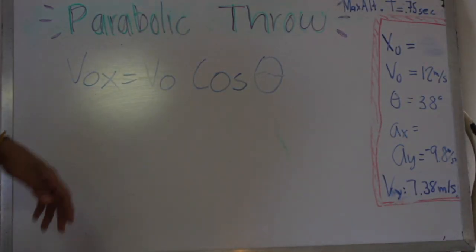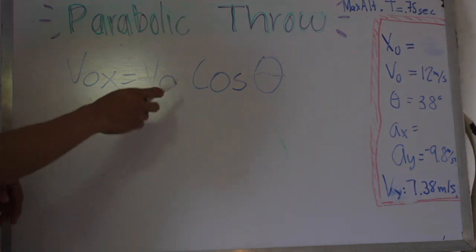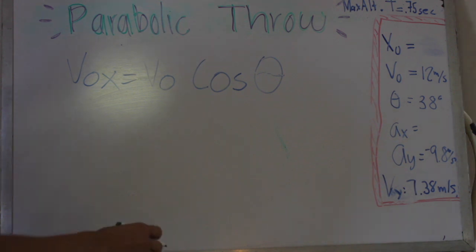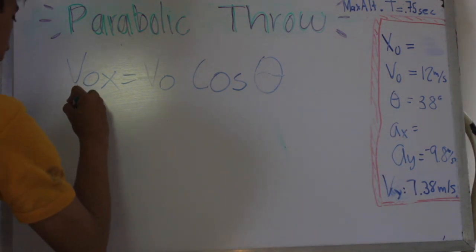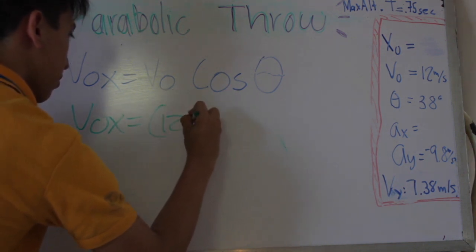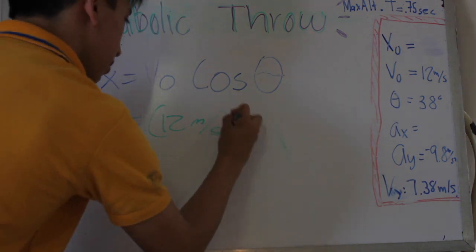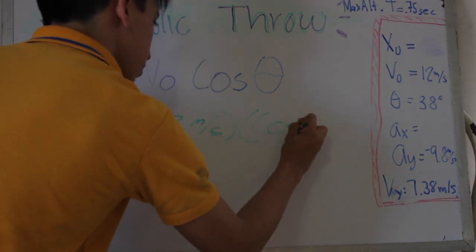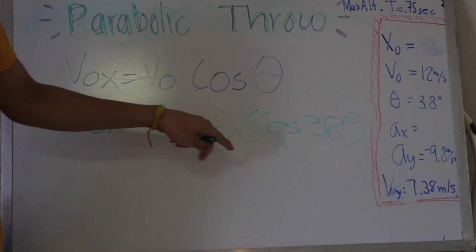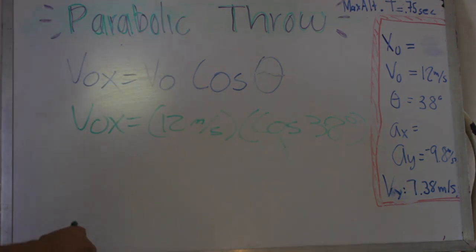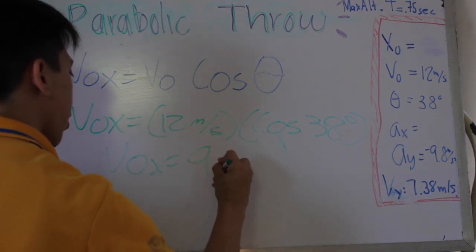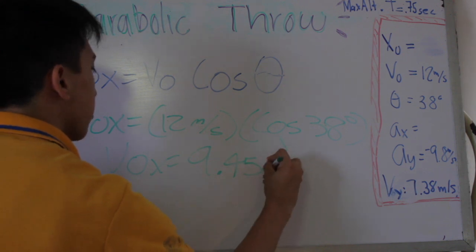Now we are going to get the initial velocity in X. We know that the initial velocity is 12 meters per second and the angle is 38 degrees, so we multiply 12 by the cosine of 38 degrees, and the result is 9.45 meters per second.